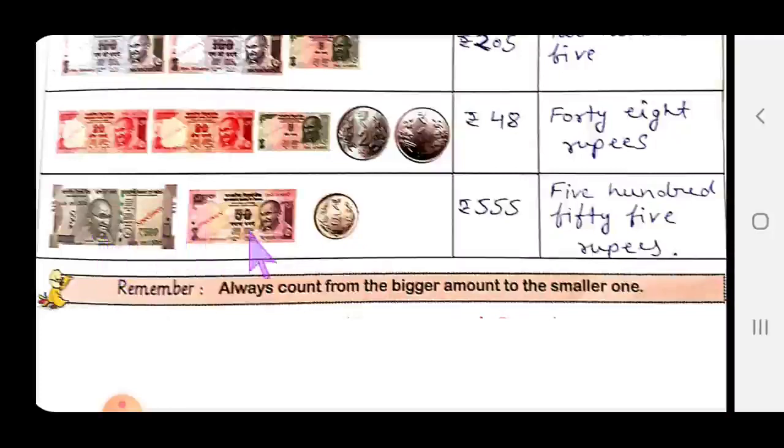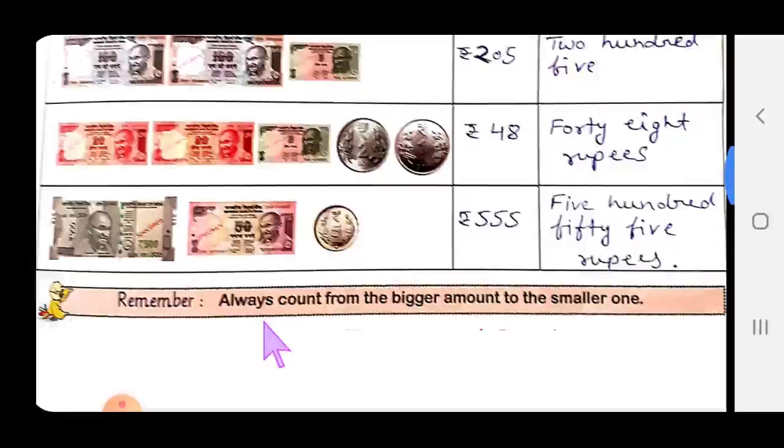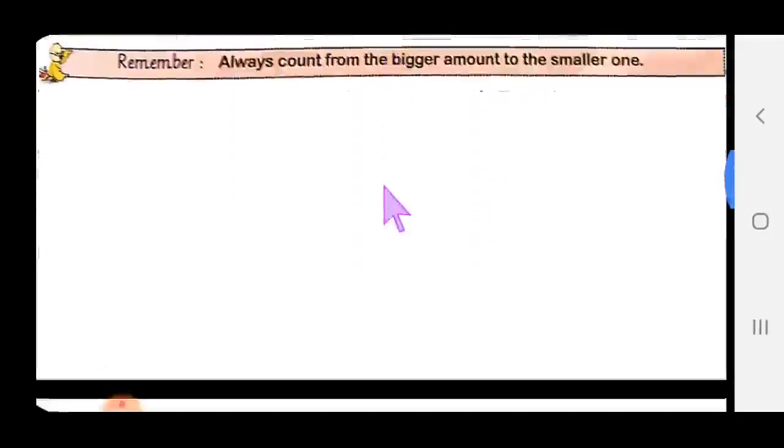Last one is 500 rupees plus 50 rupees plus 5 rupees, total 555 rupees. When you count money, always count from the bigger amount to the smaller one. For example, here take 500 first, then 50, then 5. When you start counting from bigger numbers, let's start activity.